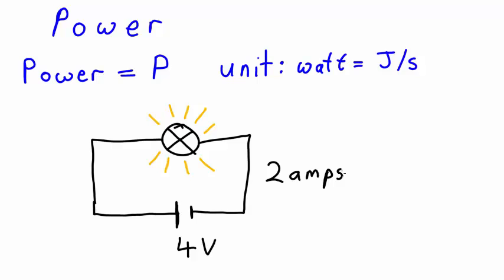Remember that a volt is just joules per coulomb. Moving 1 coulomb through a bulb with 4 volts will deliver 4 joules of energy. Moving 2 coulombs through a bulb with 4 volts would deliver 8 joules. Since the current is 2 amps, or 2 coulombs per second, that means we're going to produce 8 joules of energy per second.